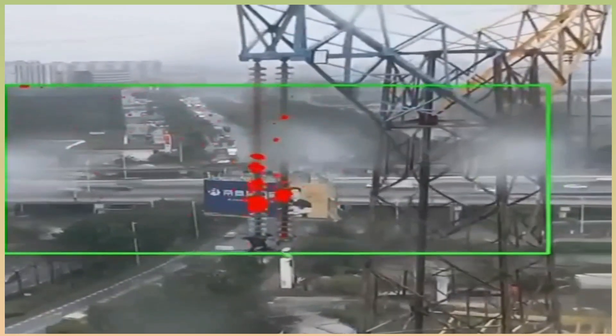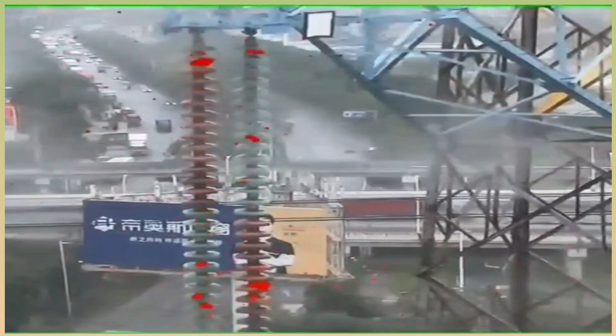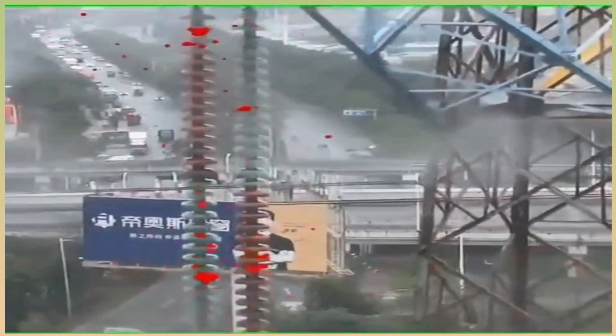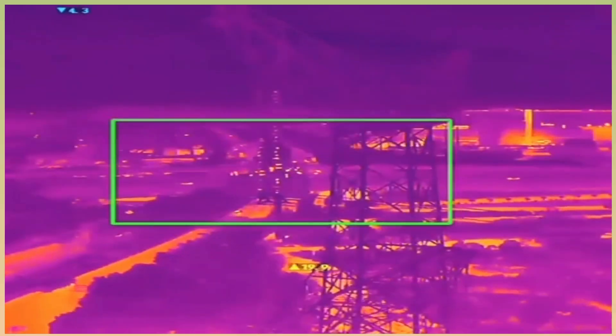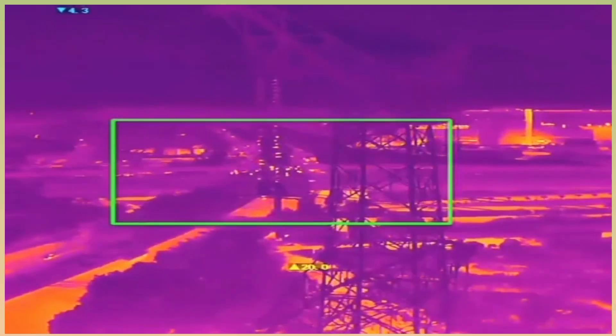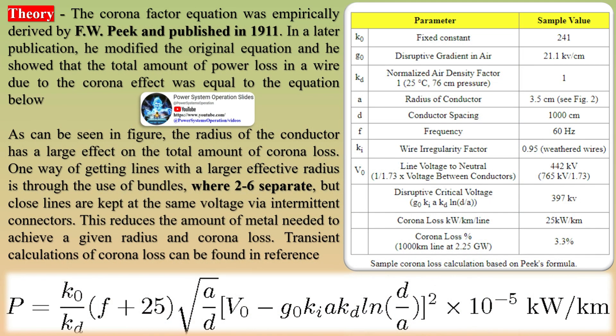Corona discharge in transmission lines can lead to hissing and crackling noises, a glow, and the smell of ozone generated from the breakdown and recombination of O2 molecules. The color and distribution of this glow depends on the phase of the AC signal. Positive coronas are smooth and blue in color, while negative coronas are red and spotty. Corona loss only occurs when the line-to-line voltage exceeds the corona threshold. Unlike resistive loss, the percentage of power loss due to corona is a function of the signal's voltage.